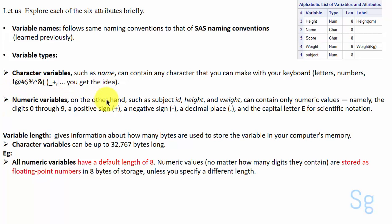Numeric variables, on the other hand, such as subject ID, height, and weight, can contain only numeric values, namely the digits 0 through 9, a positive sign, a negative sign, a decimal place, and the capital letter E for scientific notation.